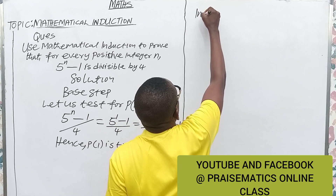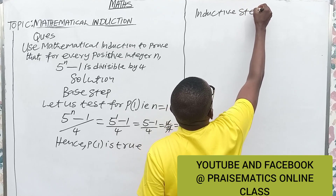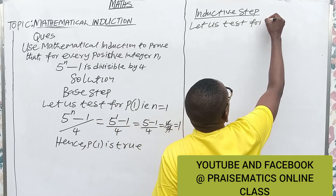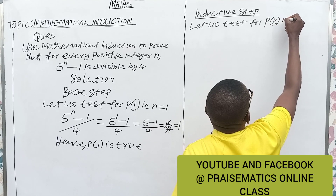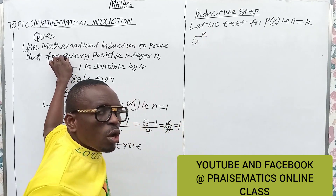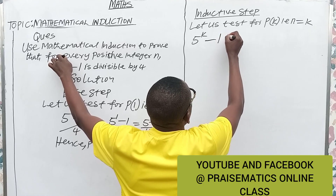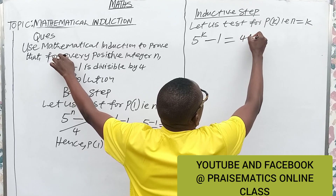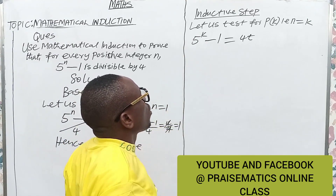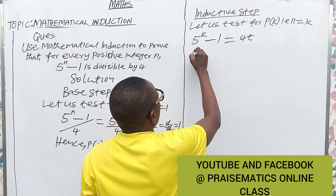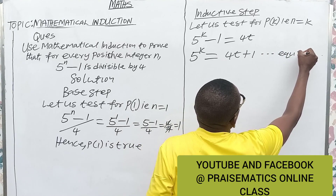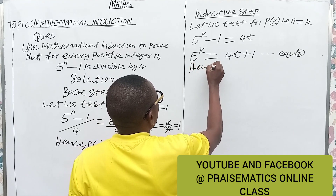Case 2 is the inductive step. We test for P(k), that is when n equals k. From the equation we have 5 raised to the power k minus 1 is divisible by 4. Let us say this equals 4t, so t equals 5^k minus 1 divided by 4. Making 5^k the subject, we have 5^k equals 4t plus 1. Call this equation 1.